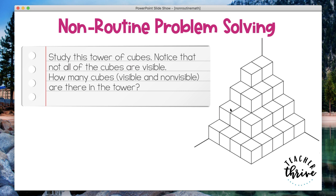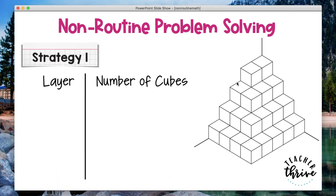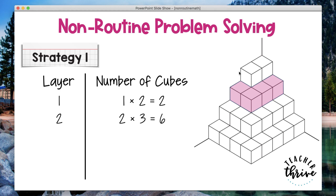There are a few different strategies that students might use to solve this. One strategy is making a table of layers and then the number of cubes in each layer. For instance, looking at layer one, you can see it has two cubes, so one times two is two. Then if a student were to look at the second layer below layer one, they would see that two times three is six — six cubes in that layer. They're basically looking at each layer as an array, looking at how wide and how long each layer is to find the dimensions to multiply.